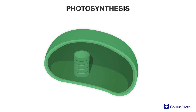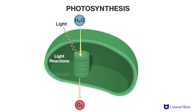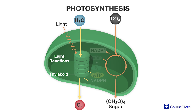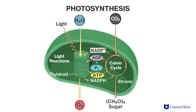Photosynthesis consists of two stages: the light-dependent reactions, which take place in the thylakoids, and the light-independent reactions, known as the Calvin cycle, which takes place in the stroma.